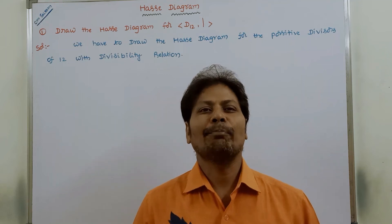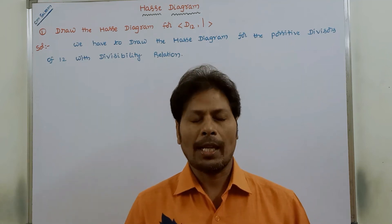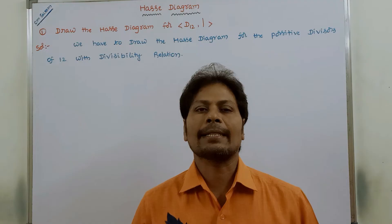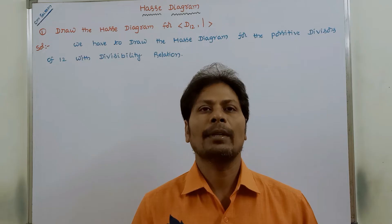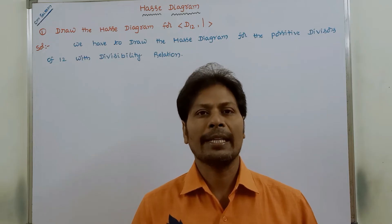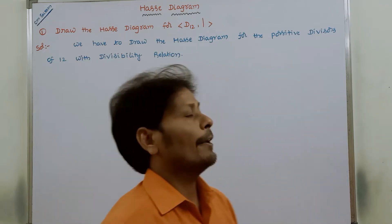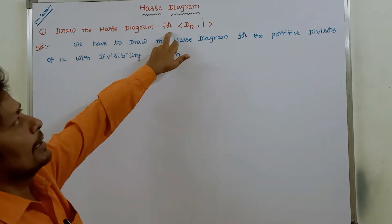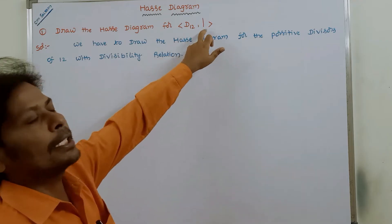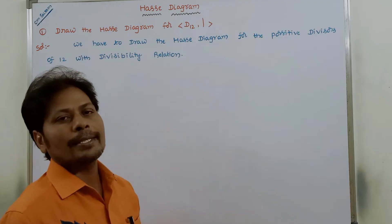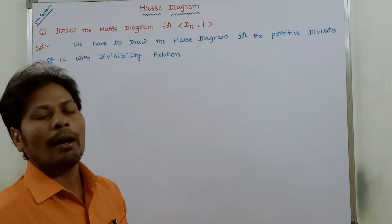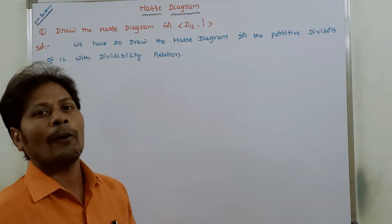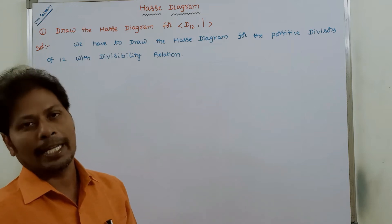Hi friends, welcome back to our YouTube channel. Today we have to discuss an example problem on Hasse Diagram in Discrete Mathematics. The given problem is: draw the Hasse Diagram for D12 with divisibility relation, meaning we have to draw the Hasse Diagram for the positive divisors of 12 with divisibility relation.